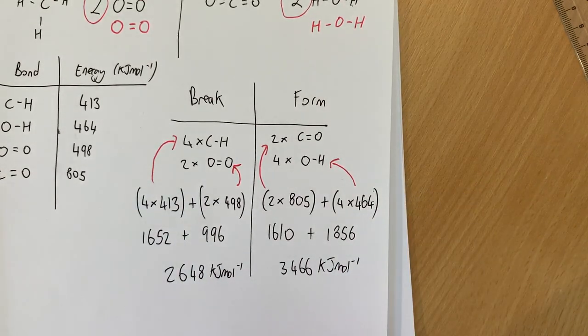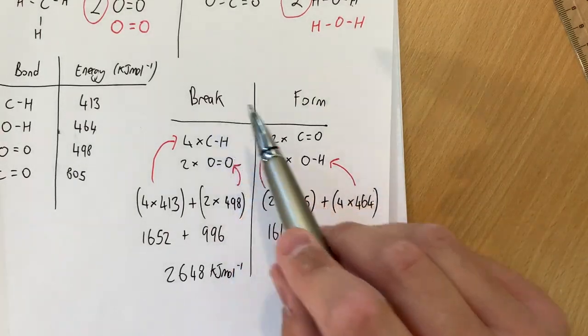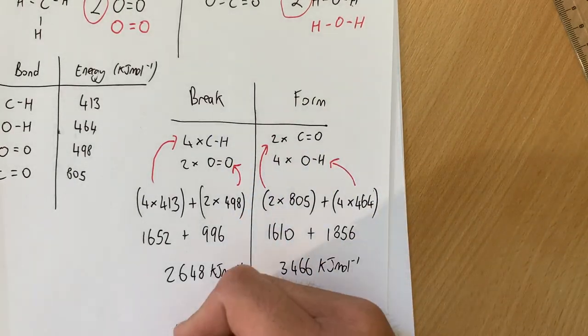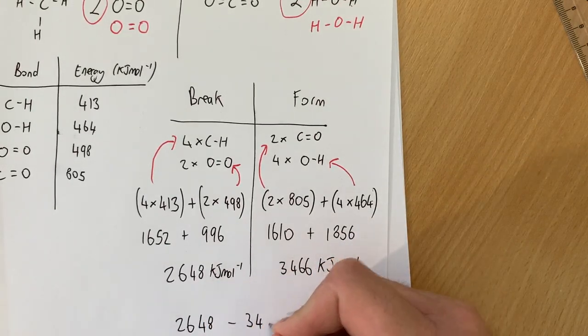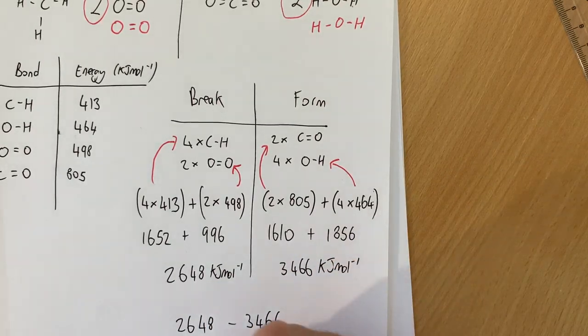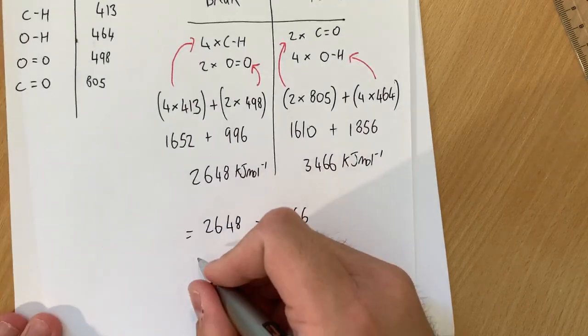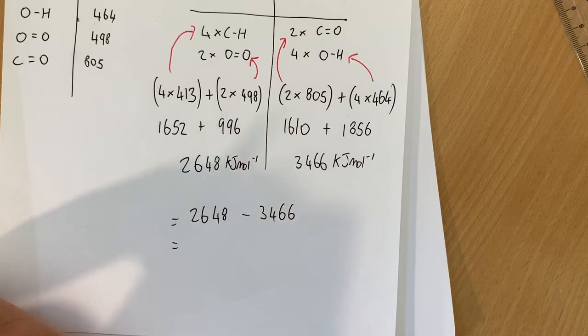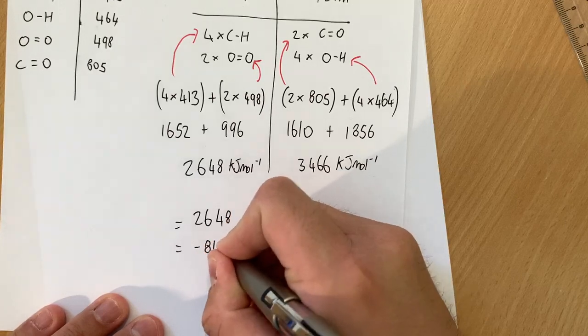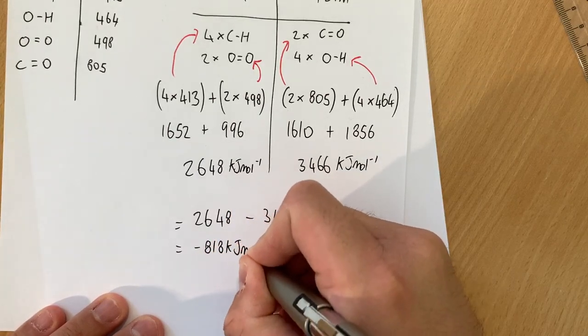And then we go back to our original calculation which is the energy change is the energy needed to break minus the energy needed to form. So we're going to do 2,648 minus 3,466. And our final answer is going to be minus 818 kilojoules per mole.